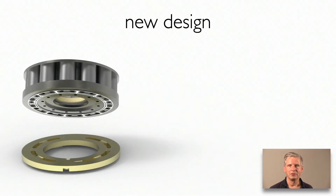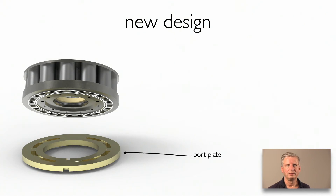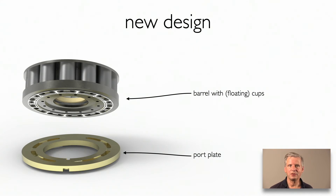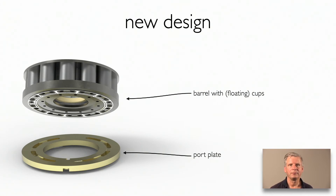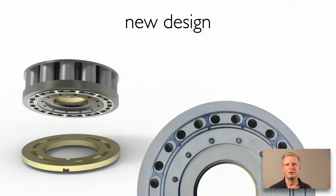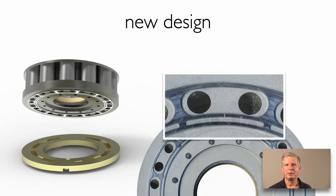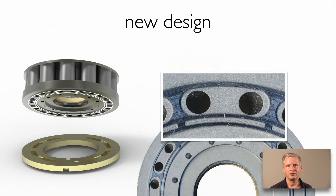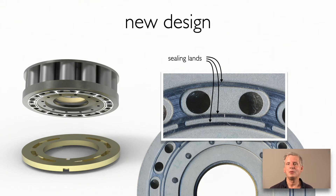But there is a solution — one which we have applied for some years already in our floating cap machines. Here you see a quite ordinary port plate and a different barrel. The shiny surface at the bottom of the barrel is a new sealing land or bearing design applied in this pump. Looking closely at one of the barrel ports: it is surrounded by sealing lands. On the outer diameter of this port, we have only one sealing land, like in conventional designs.